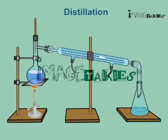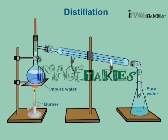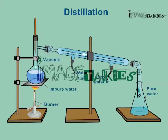Distillation: Water obtained from any source, however hard it may be, can be softened by distillation. Distilled water is both soft and pure. The condensation of water vapours produced on heating is the principle involved in this process. This method removes both temporary and permanent hardness.